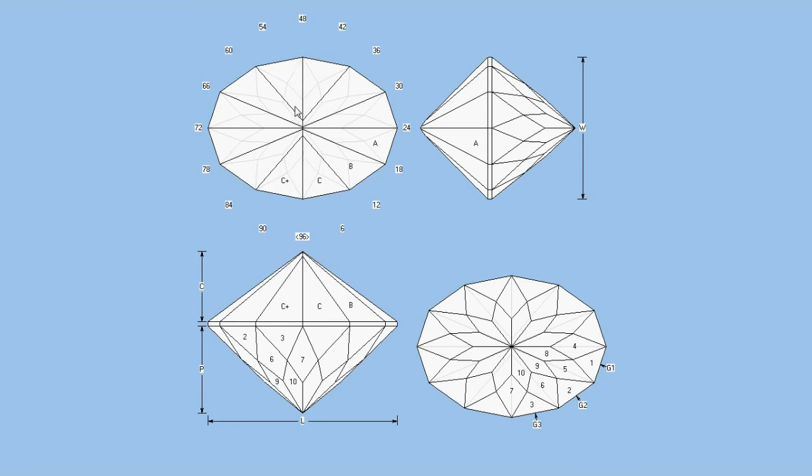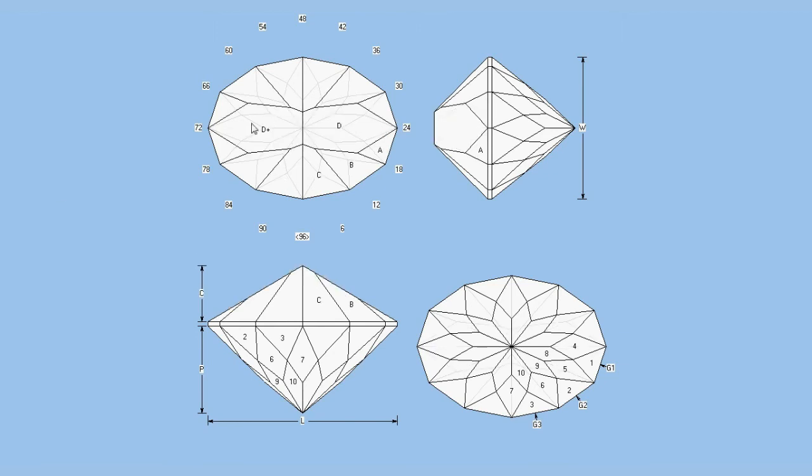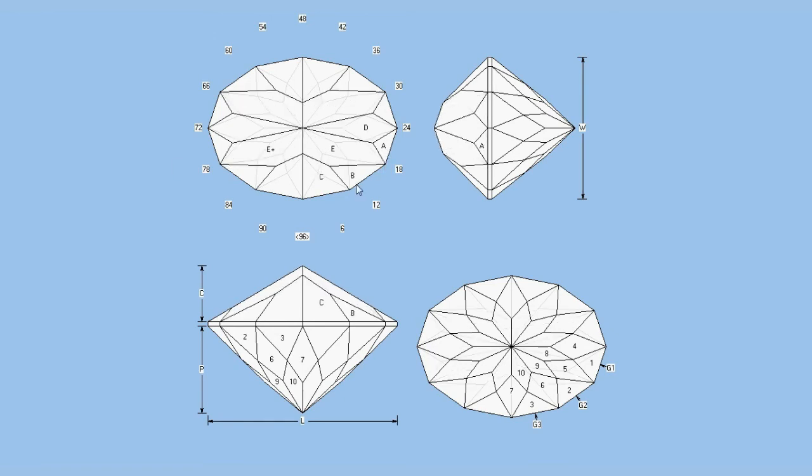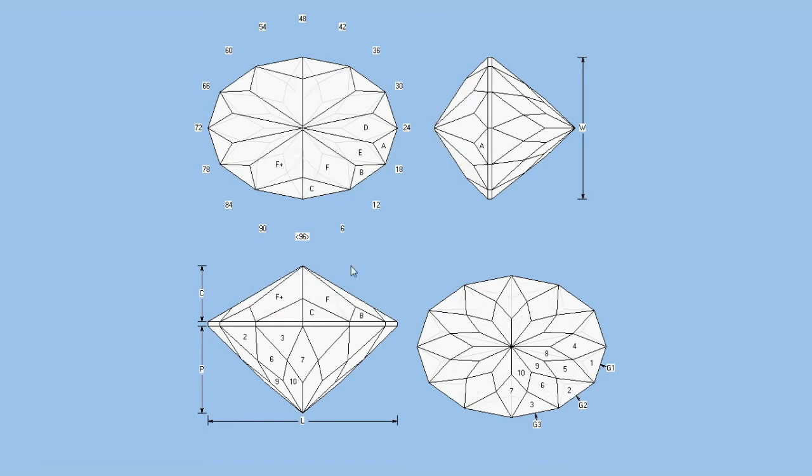Our next row of facets on the crown begins again at the end. It's going to meet the girdle and split those A's, the same kind of pattern we did when cutting the pavilion. Facet D drops in here. Facet E, once again, meets the girdle here between A and B. Facet F meets the girdle here between B and C. And facet G is going to split the C's right here at the bottom and the top.